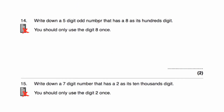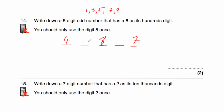Question number 14 says write down a 5-digit odd number. So it's an odd number, so it's going to end in a 1, 3, 5, 7, or 9. It has an 8 as its hundreds digit, and you should only use the digit 8 once. So let's make it end in a 7, and choose other digits — I'm going to choose 492. So my odd number is 49,827. Let's check: it's a 5-digit number — yes; it's odd — yes; and it's got an 8 as its hundreds digit — correct.